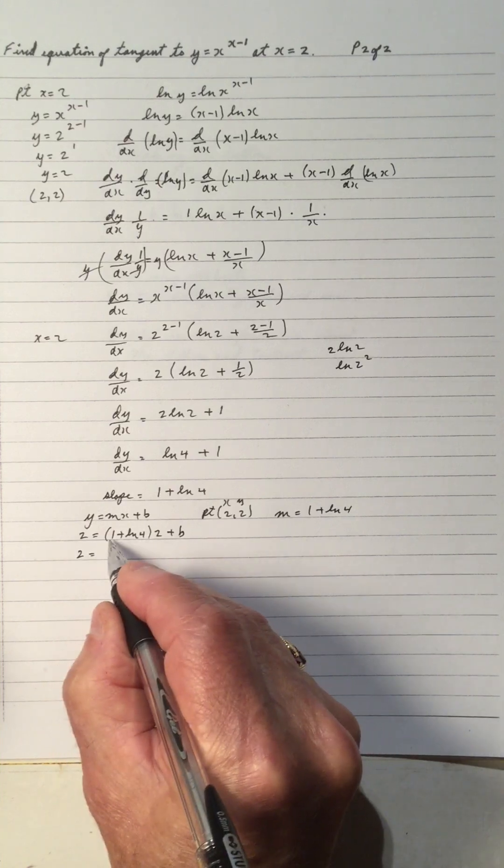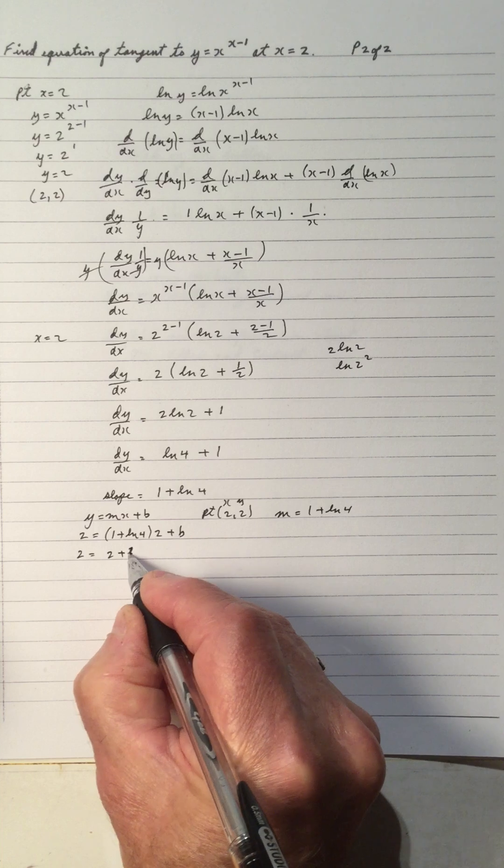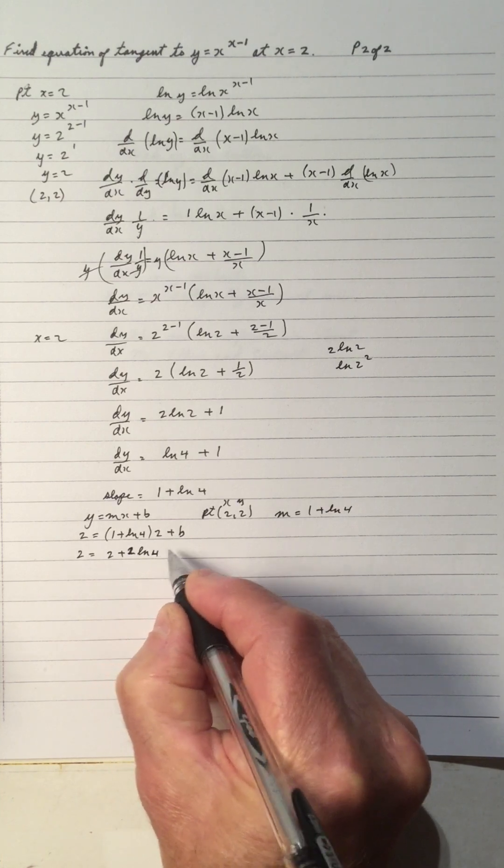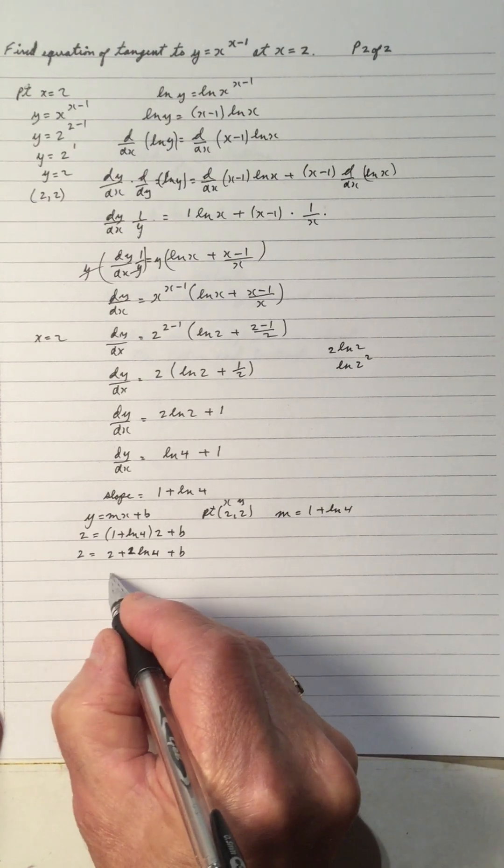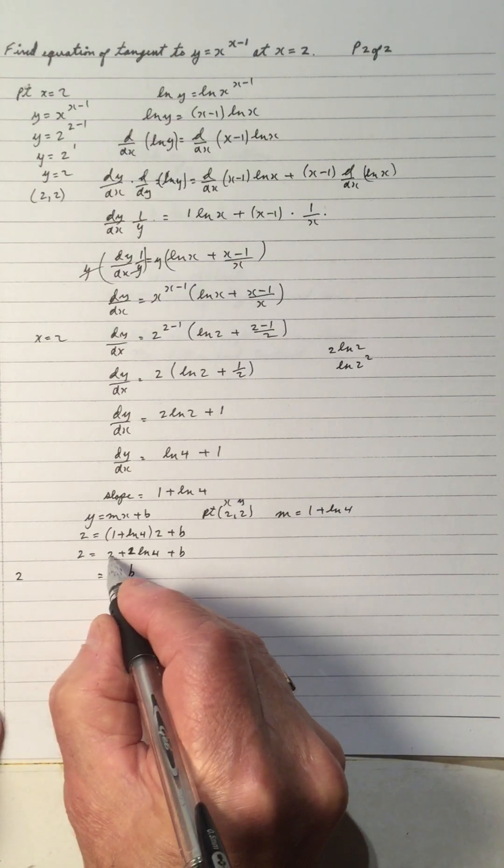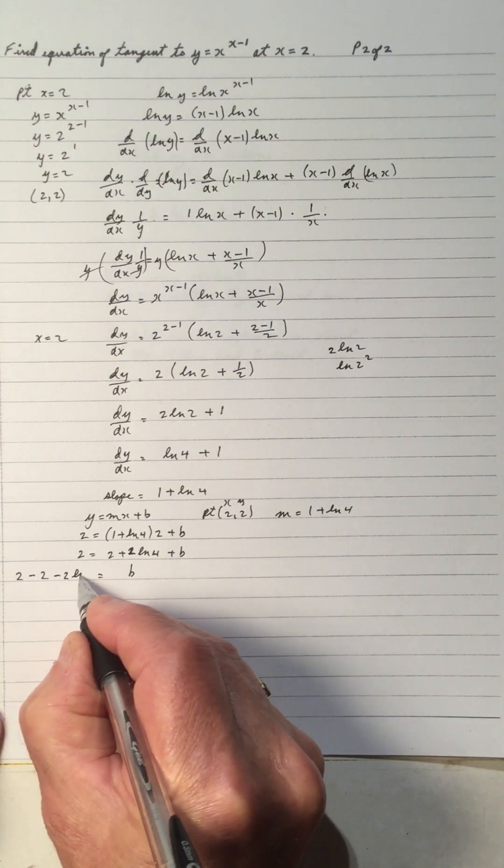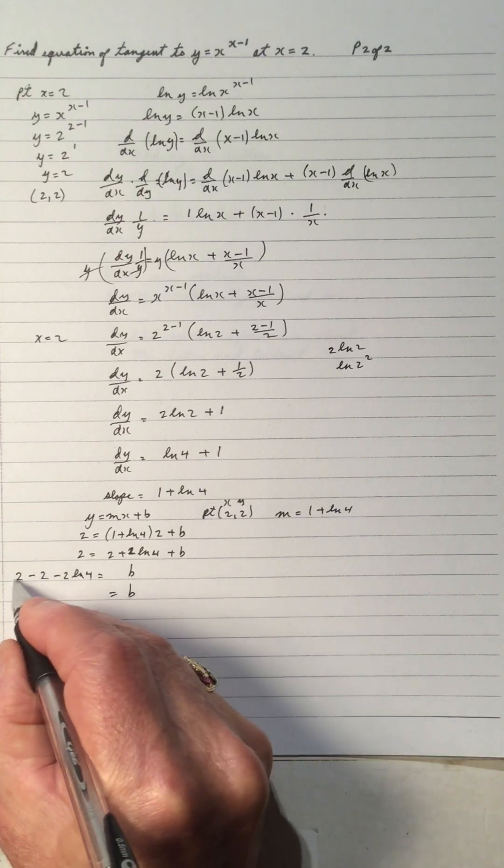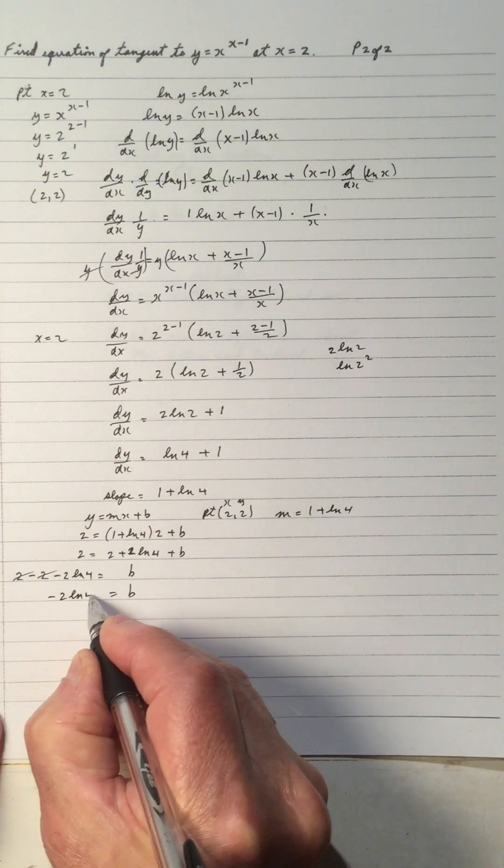And x is 2 plus b. So we get 2 equals the slope, 1 plus ln 4, multiply by 2. We get 2 plus 2 ln 4 plus b. And we're solving for b. So we isolate b right there. Move this over and make a minus 2, make a minus 2 ln 4. So b becomes, the 2's canceling, negative 2 ln 4.